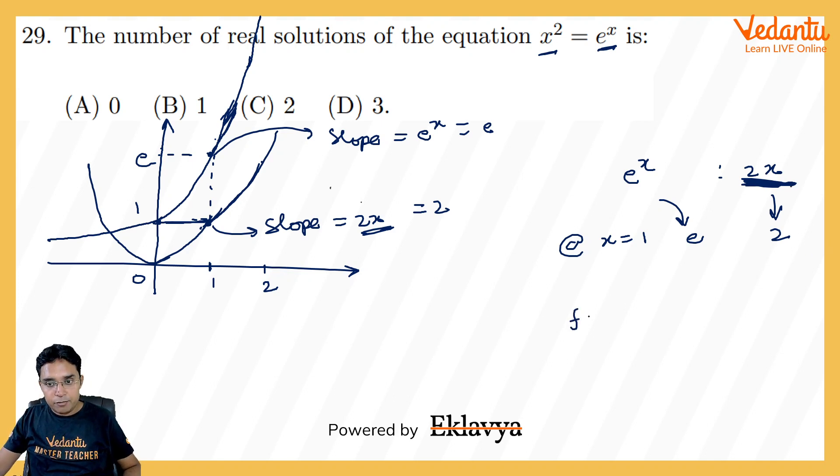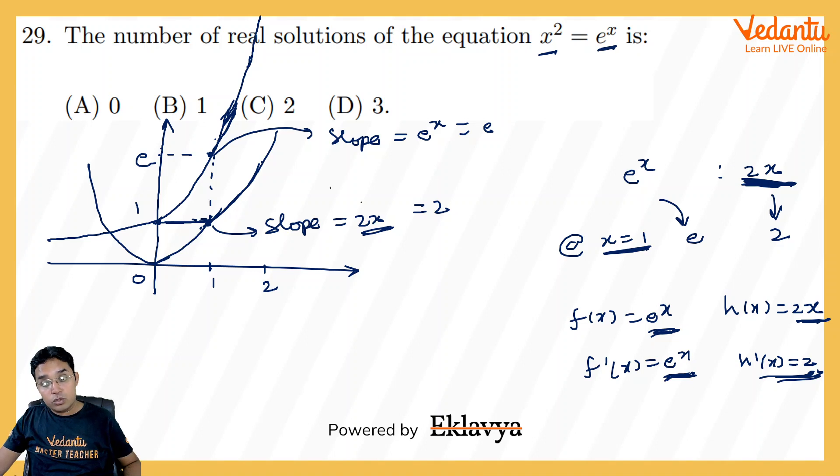Let us compare the functions e power x and h(x) is equal to 2x. Why I am comparing it? Please listen carefully. Its derivative would be e power x and its derivative will be 2. Already we have checked that at x is equal to 1, this e power x was more than 2x. And slope of e power x you can check at x is equal to 1 or beyond x is equal to 1 will be far bigger than 2 because its slope is going to be 2 always whereas its slope will also increase.